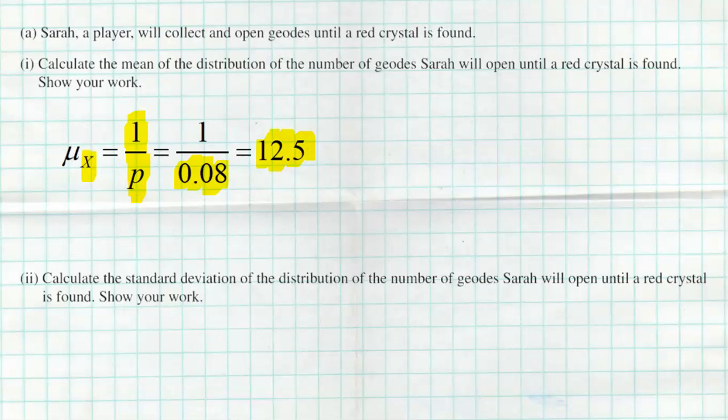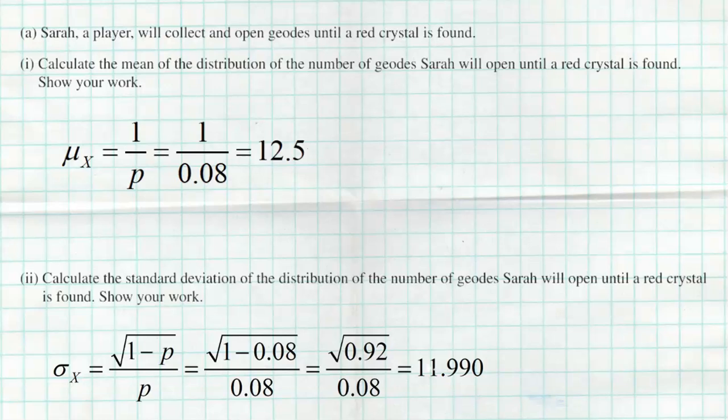It could come sooner, could come later, which is why part two wants us to calculate the standard deviation — how many geodes she opens to get her red crystal could deviate from 12.5. Again, the formula is on that front page, right next to the mean formula. We take the square root of (1 minus P) divided by P. For us, that's the square root of 0.92 divided by 0.08. Do that math and we get 11.990.